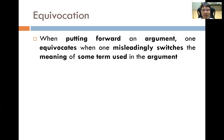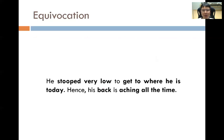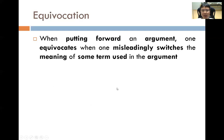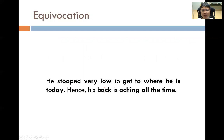Equivocation: when putting forward an argument, one equivocates by misleadingly switching the meaning of a term used in the argument. For example: 'he stooped very low to get to where he is today' — meaning he had bad ethics to rise to his position — and therefore 'his back is aching all the time' — because he literally goes very low. This is equivocation because 'stooping very low' does not literally mean he bends down physically. This is a fallacy in argument.